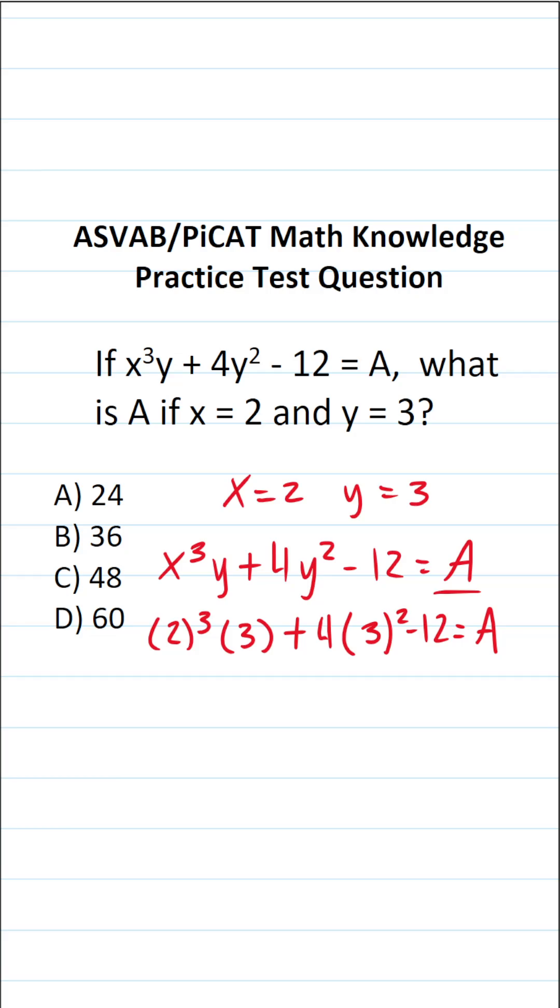All right, so let's work this out step by step. The first thing I want to work out is 2 to the third power. 2 to the third power is the same thing as 2 multiplied by itself 3 times. 2 times 2 is 4. 4 times 2 is 8.